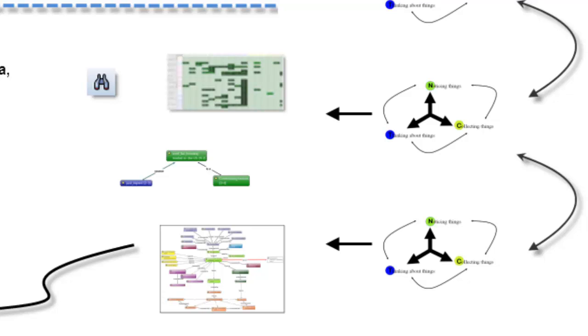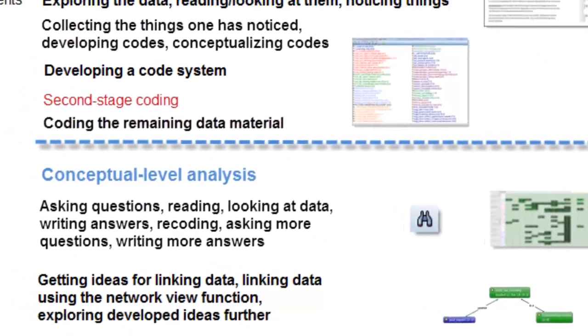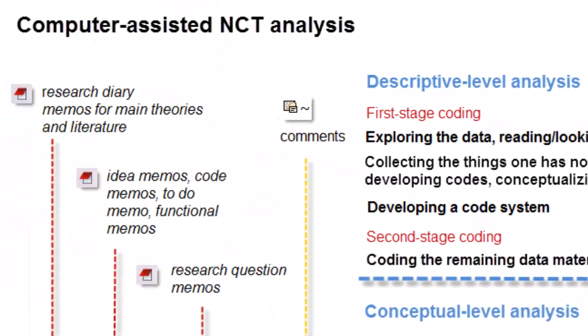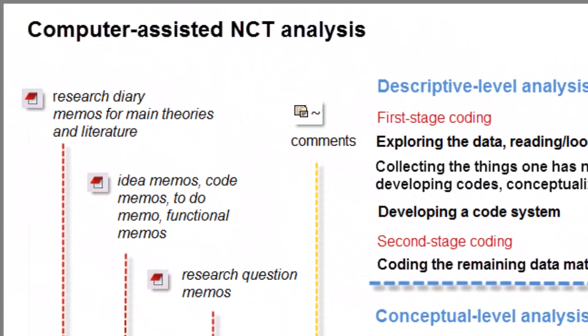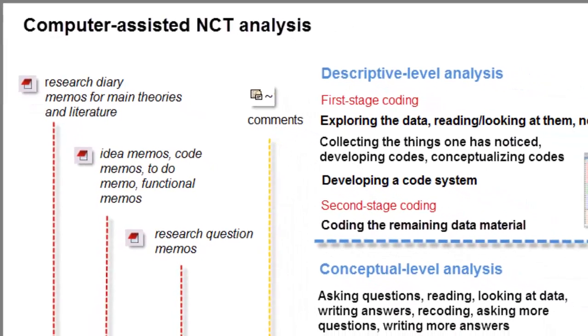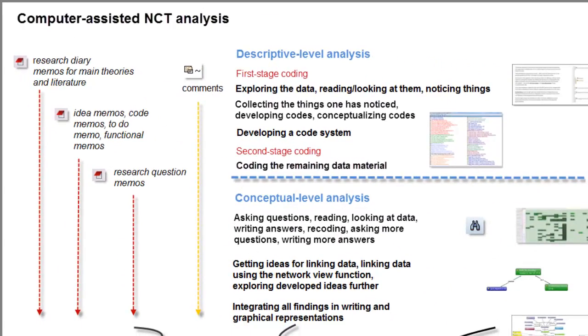And that's why this whole method of working within software is called the NCT method of computer assisted analysis. On the left hand side, you see the process of writing various types of comments and memos that is accompanying the process, and that's also exemplified in the book.